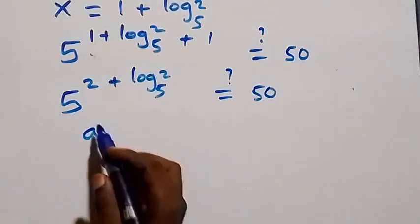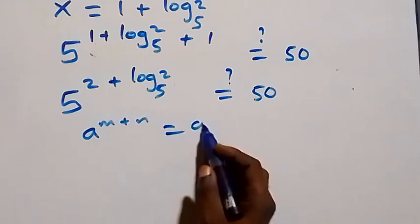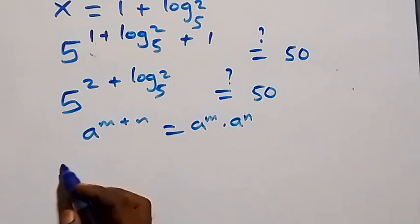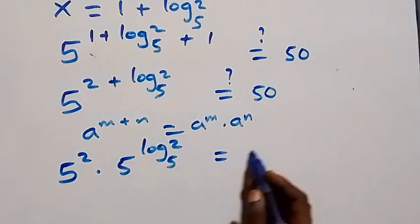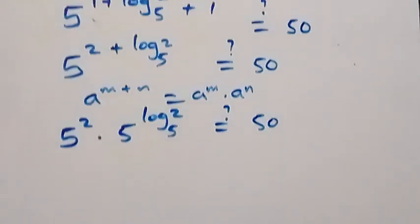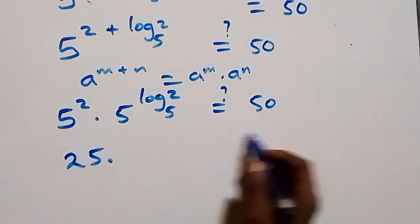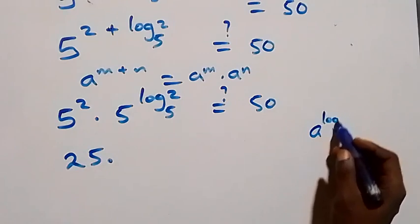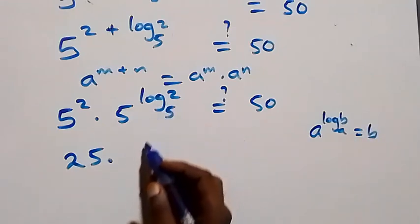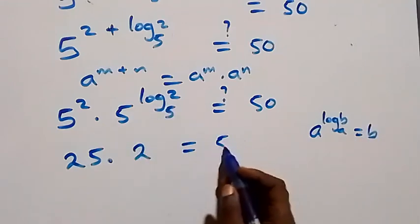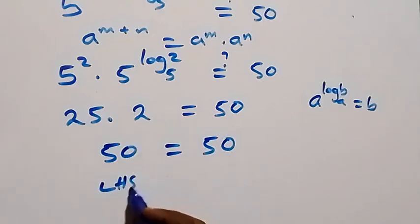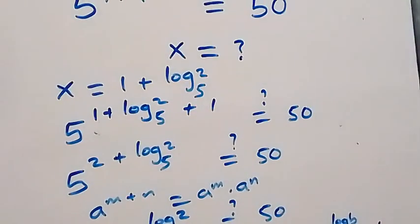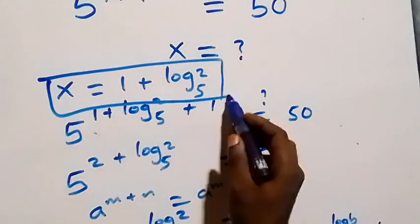Following the law of indices, this becomes 5 squared times 5 raised to power log 2 to base 5 equals 50. Now 5 squared is 25, and using the identity a raised to power log b to base a equals b, the term 5 raised to power log 2 to base 5 simplifies to 2. So 25 times 2 equals 50, which equals 50. Left hand side equals right hand side, so we conclude that x equals 1 plus log 2 base 5 satisfies the given problem.